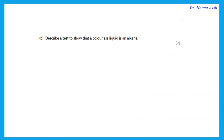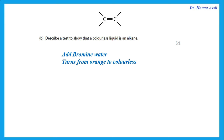Describe a test to show that a colorless liquid is an alkene. Alkene means it has a double bond. The test for alkenes is to add bromine water — it turns from orange to colorless.